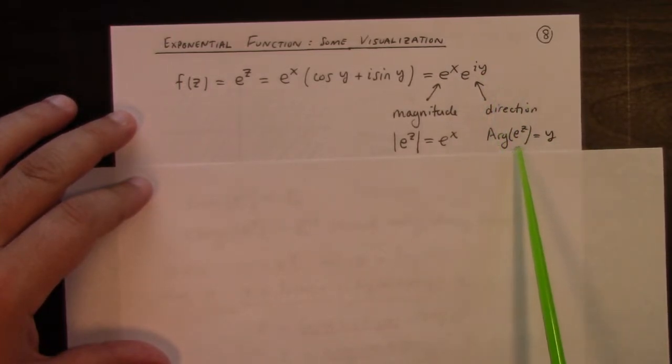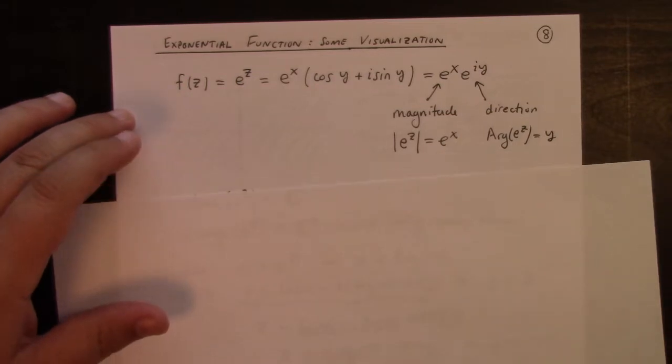Notice that the argument, in other words the standard angle of e to the z, is actually given by the imaginary part of z, which is y. And the magnitude of e to the z is e to the real part of z, which I'm using x to denote.